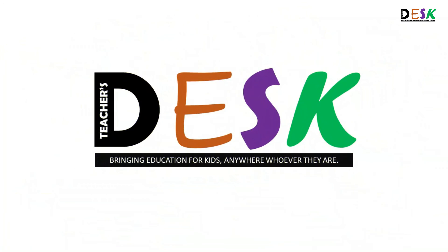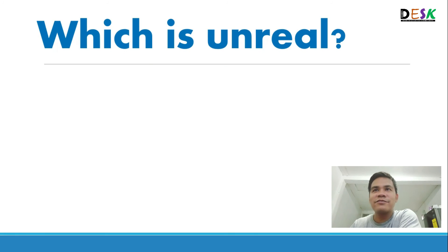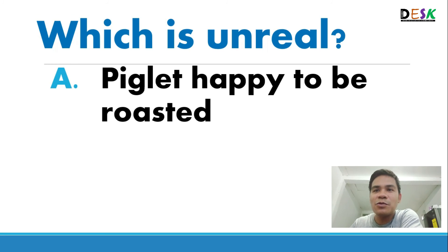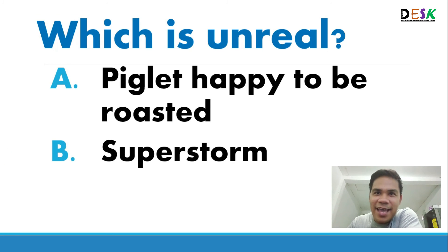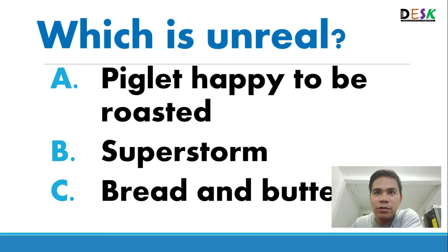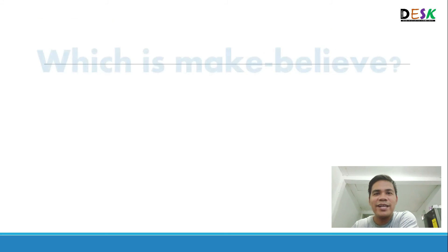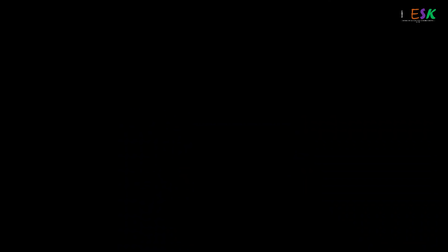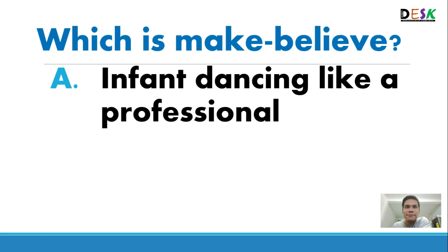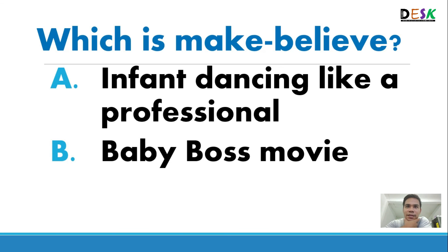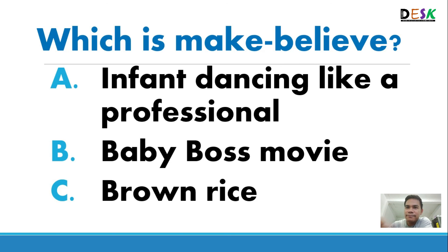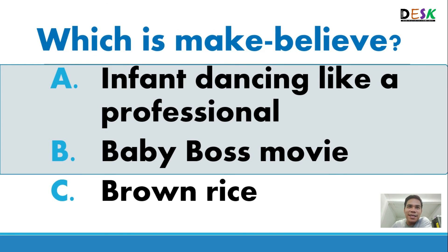Next, which is unreal? We have a piglet happy to be roasted, b a super storm, and c bread and butter. The right answer is a and b. Next, which is make-believe: a infant dancing like a professional, b Baby Boss movie, or c brown rice? The correct answer is a and b.